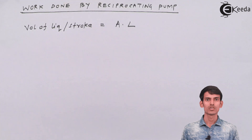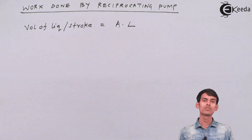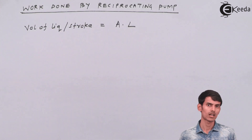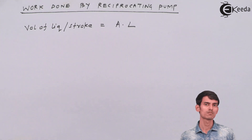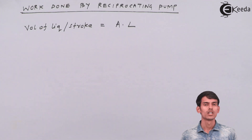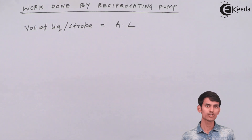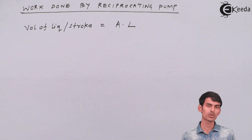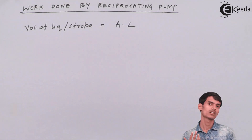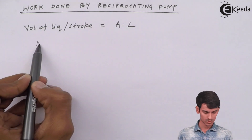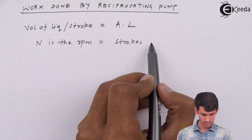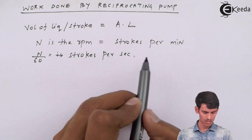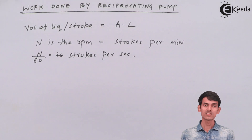The volume of liquid discharged per stroke is cross-sectional area A into stroke length L. Now you should also know how many strokes take place per second. For that you need the RPM of the crank. If RPM is N, that is revolutions per minute — which is also the number of strokes per minute — then N divided by 60 gives you strokes per second. Multiplying volume per stroke by strokes per second gives volume of liquid per second.